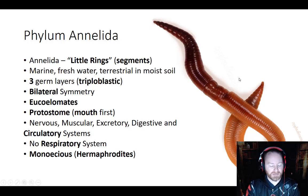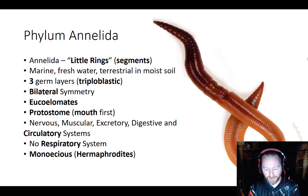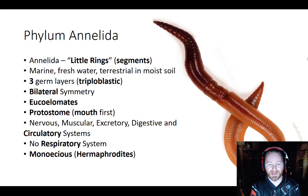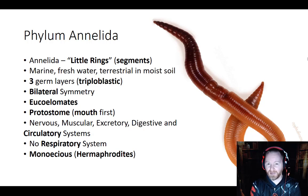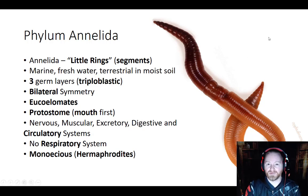Annelids are triploblastic, meaning they have an endoderm, an ectoderm, and a middle layer called the mesoderm. This is the first time we've seen a true coelomate — a eucoelom. Flatworms were acoelomates with no body cavity; roundworms were pseudocoelomates with a body cavity but no connective tissue linking endoderm to mesoderm. With eucoelom we actually see a body cavity with tissue connecting them. First time we've seen these!